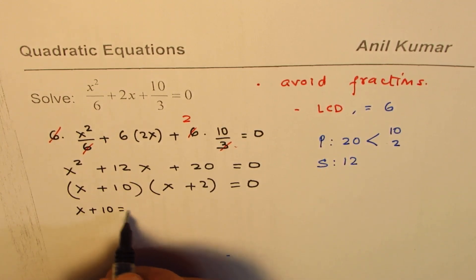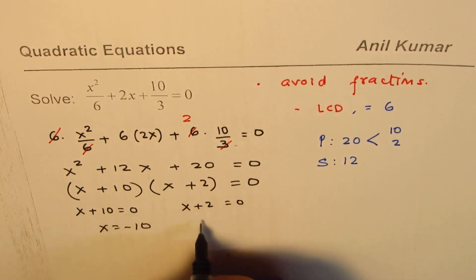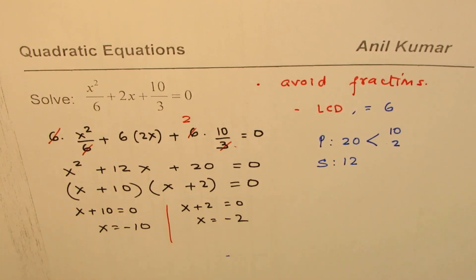When x plus 10 equals to 0, that gives you x equals to minus 10. The other, when x plus 2 equals to 0, x equals to minus 2 is the second solution. So we get two solutions for this.